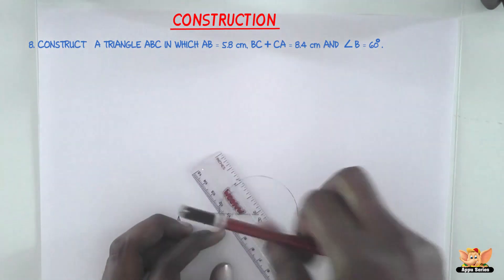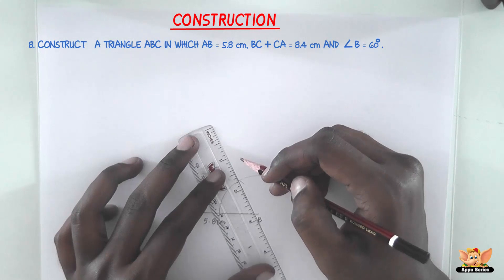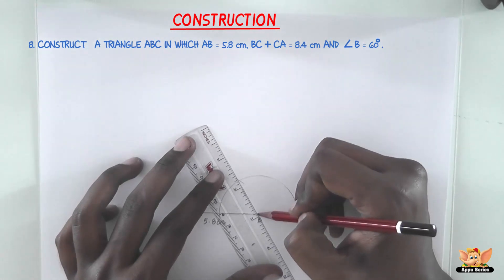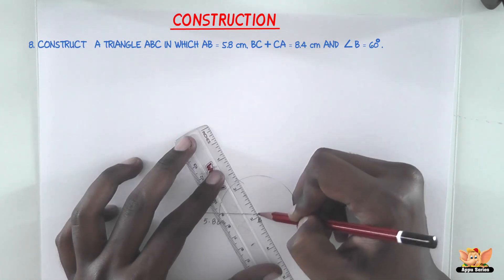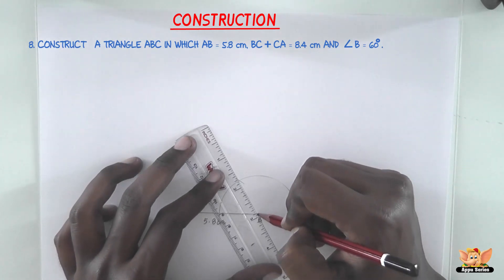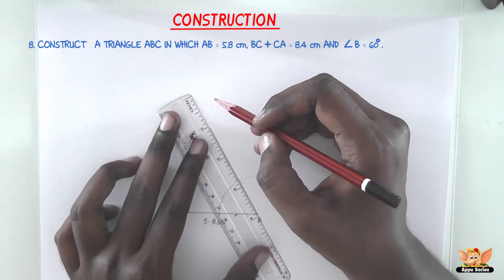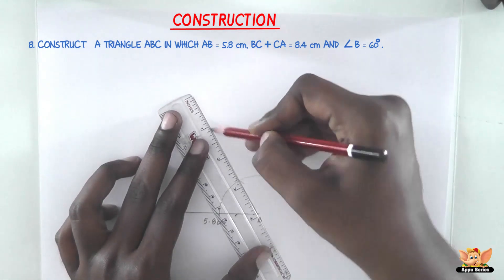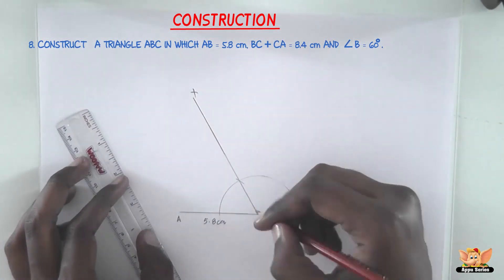Using the same radius, now join B and the point where the arc has cut the previous arc. Extend it as much as we can and name it X. So we have angle ABX equals 60 degrees.